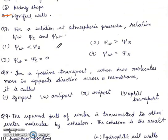Question 7: For a solution at atmospheric pressure, relation between psi s and psi w is? First, psi w less than psi s. Second, psi w more than psi s. Third, psi w equals psi s equals zero. Fourth, psi w is equal to psi s. Answer will be fourth, psi w is equal to psi s.